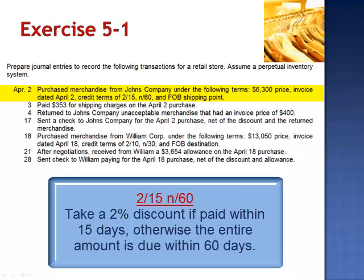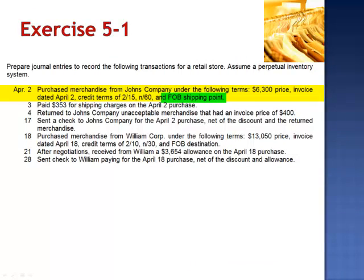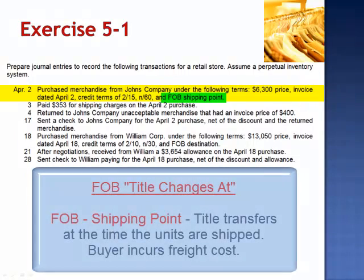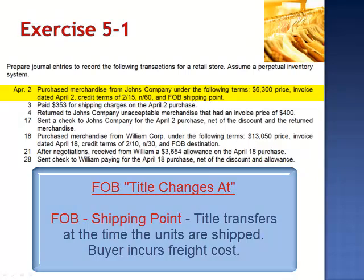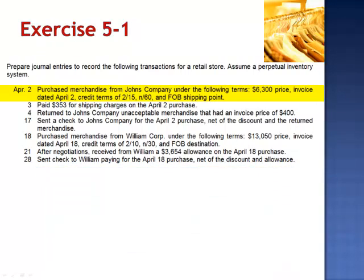Otherwise, the entire amount is due within 60 days. FOB is a term that allows us to determine who's responsible for the freight costs — the cost to transport the units from John's Company to our company. FOB is an abbreviation for free on board, but it's really clearer if you substitute the phrase 'title changes at.' So in this case, title changed at the shipping point. As soon as John's Company shipped those units, they became ours. Since they were ours, the cost of ownership, including the cost of transportation, became our burden.